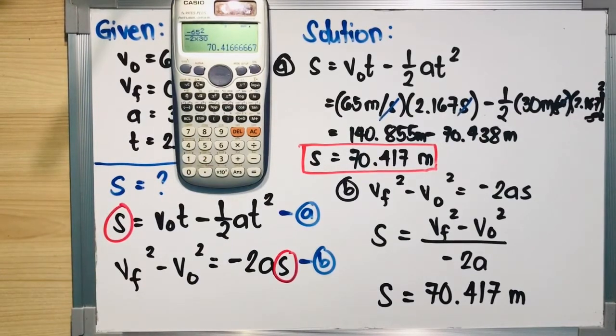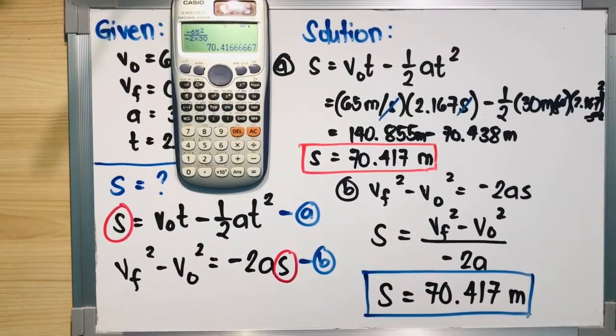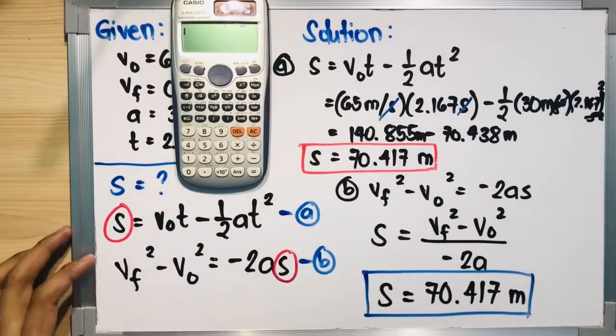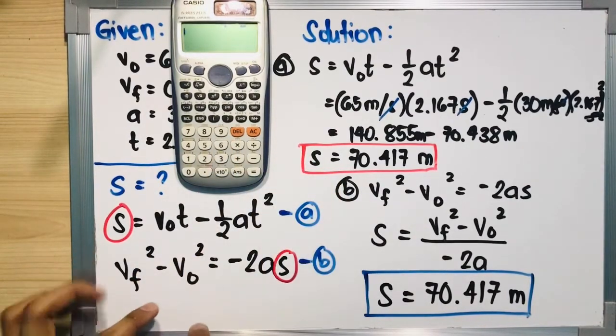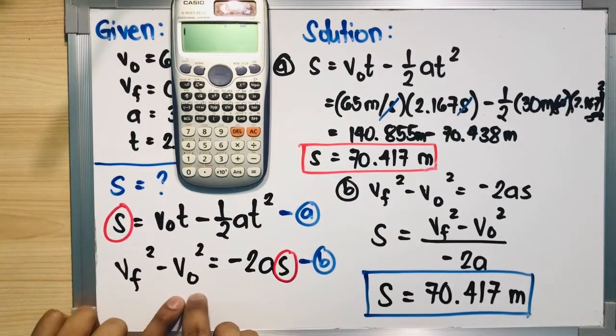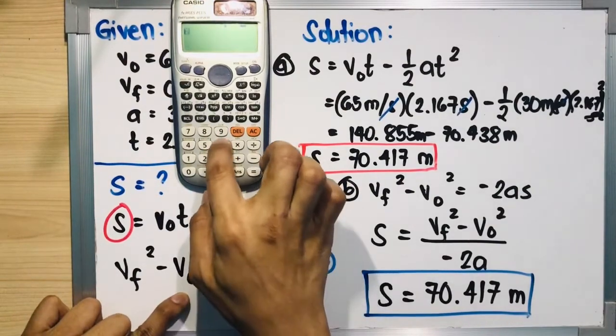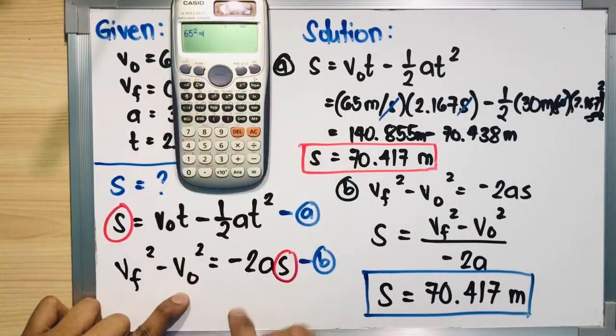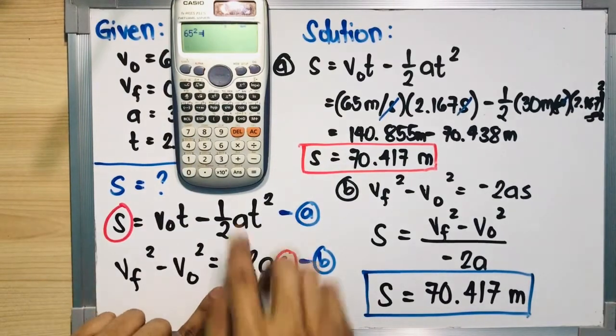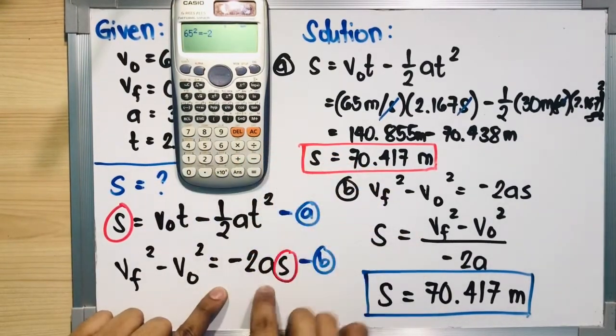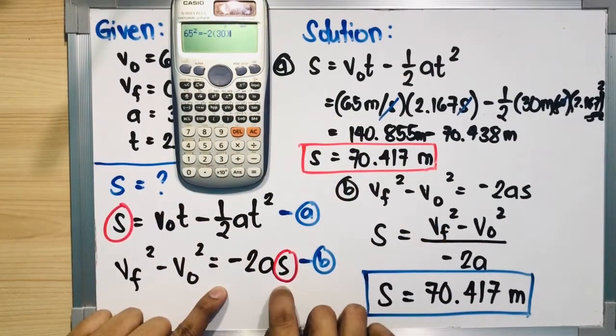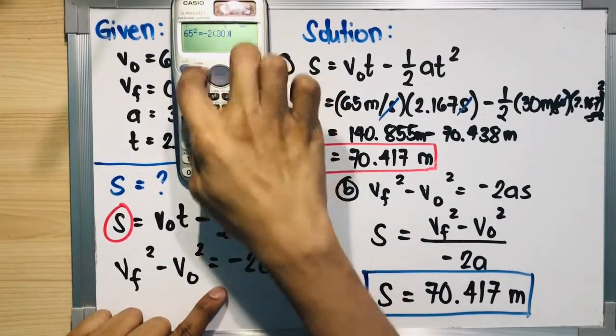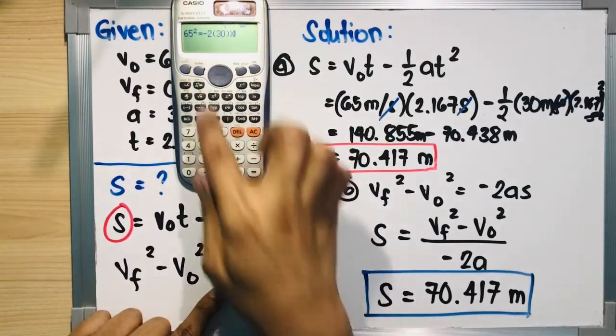So that's it. If we use the calculator method again, what is our solution for calculator method? We have the third equation, minus v₀ squared so 65 squared, use equals, alpha equals, minus 2 times acceleration is 30, and then you have your unknown which is designated by X, and shift solve.